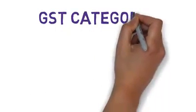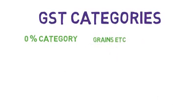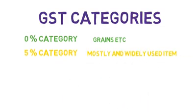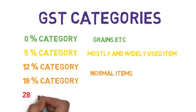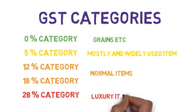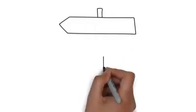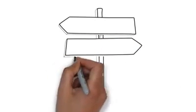There will also be five rate categories in GST in India: 0% category which will apply on food grains etc., 5% category which will apply on mostly and widely used items, 12% and 18% categories which will apply on items which are normally used, and 28% category which will apply on luxurious items.